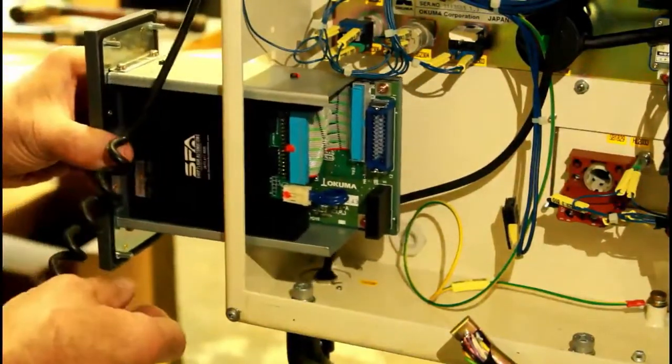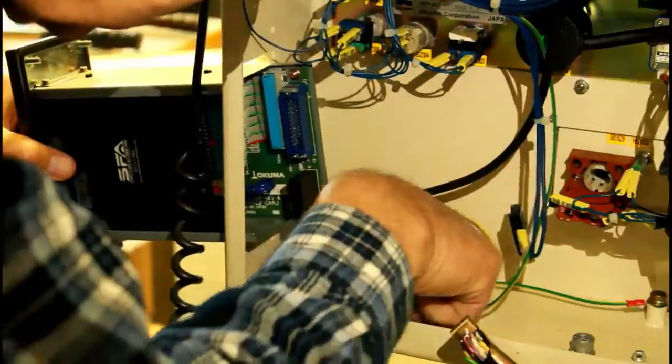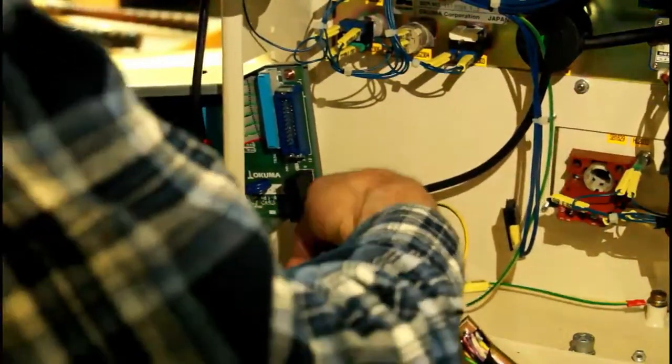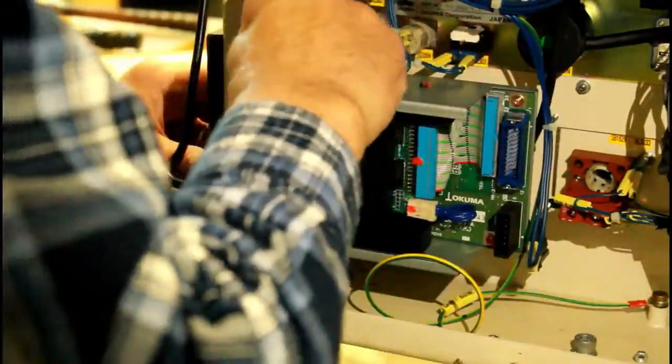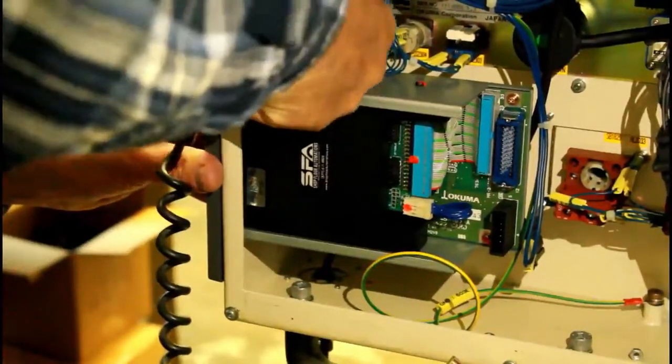Slide your core unit received from Shopfloor Automations into the original spot. Be sure to clear all cables as you slide the hardware back in. Reattach the nuts that you removed from the housing in order to hold the unit in place.